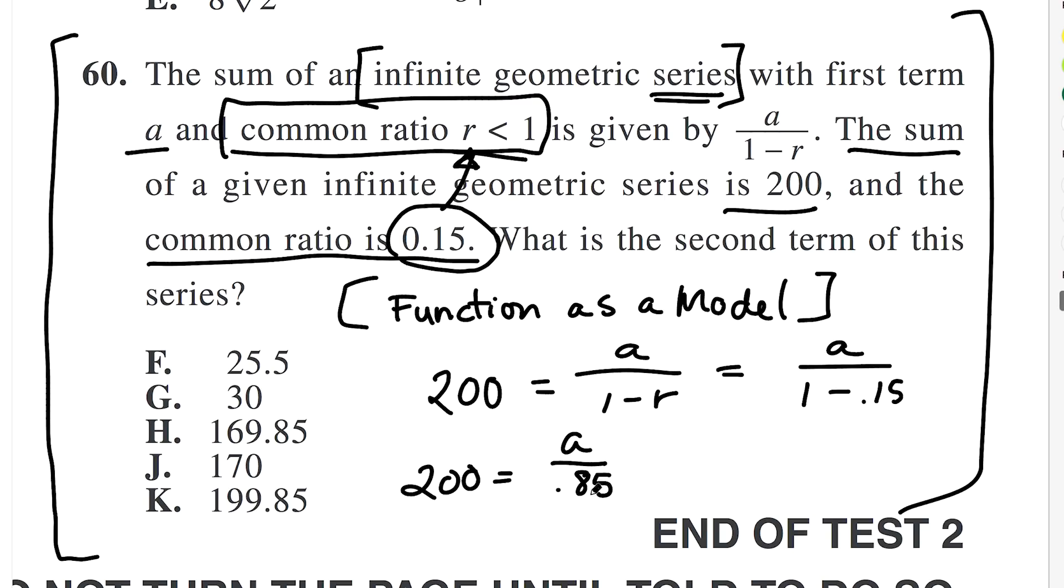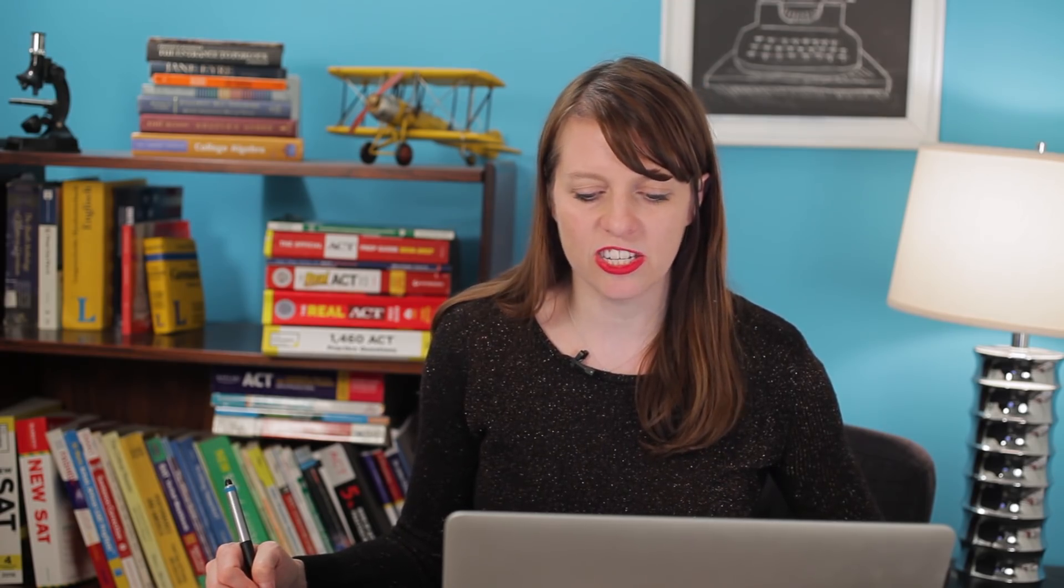So this just basically becomes 0.85, so I get 200 equals a over 0.85. And now all I do is multiply both sides by 0.85 and that gives me 85 plus 85, which is 170 equals a. And I would recommend you can just get out your calculator and do that math if it's any strain to the brain or just so you make sure you don't make any mistakes.